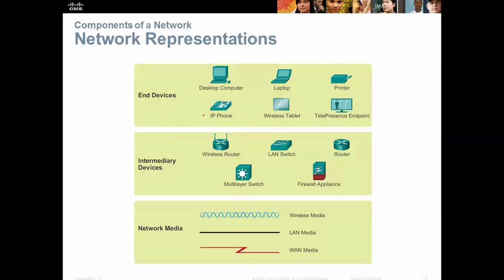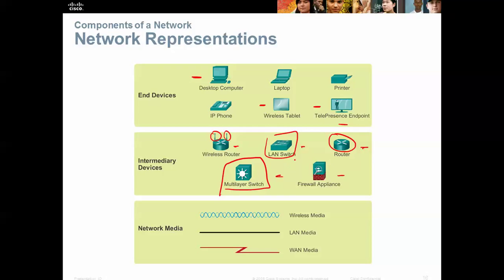On network representations in Cisco, you'll see different symbols: a desktop computer is easy to identify; wireless tablets and telepresence units with video cameras; wireless routers shown with radios; LAN switches shown as a small box with arrows in and out; routers as a cylinder with arrows; and multi-layer switches as a box. For this course we'll mainly use wireless routers, LAN switches, and routers. For wiring, wireless media, LAN/Ethernet media, and WAN media each have their own representative symbols.